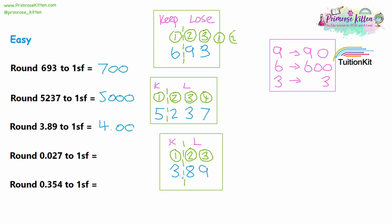For question four, we have 0.027, rounding to one significant figure. The most significant figure is not zero units, because zero units doesn't have any value. Your first significant figure always has to be the first non-zero number. So the first significant figure here is the two hundredths, and the second most significant figure is the seven. We rule off after the first significant figure, giving us 0.02. But the first number we're losing is a seven — that's higher than five, so we round up to 0.03.